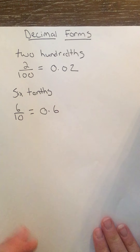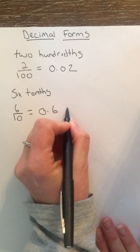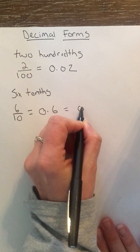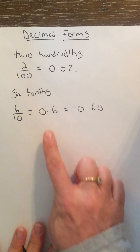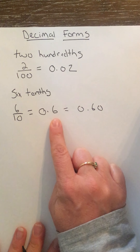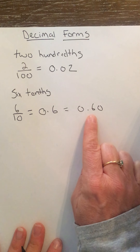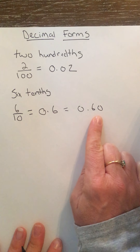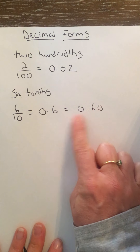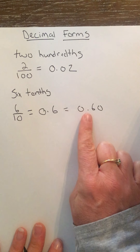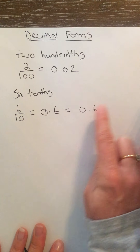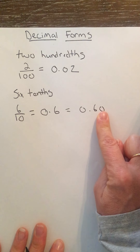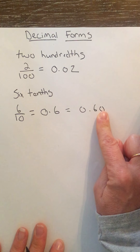We could also write it this way: 0.6 and 0.60. Those are equivalent and they mean exactly the same thing. Six tenths and sixty hundredths are equivalent decimals.